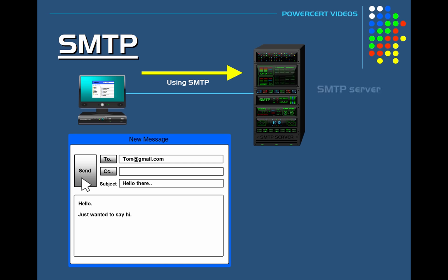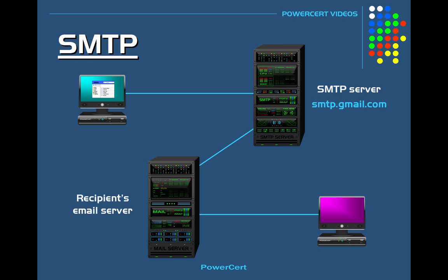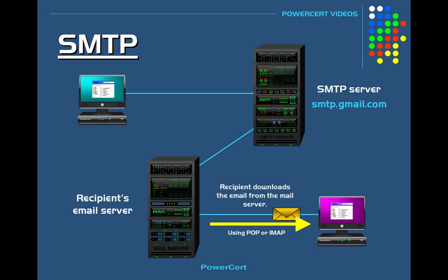This server is also known as the SMTP server, and this is what's configured in your email client. For example, if you're using Gmail, the SMTP server address would be smtp.gmail.com. Your SMTP server will then send the message to the recipient's email server, also using SMTP. The email will stay on the recipient's email server until the recipient logs in and downloads the email using POP or IMAP, or they can view the email on the server using webmail.